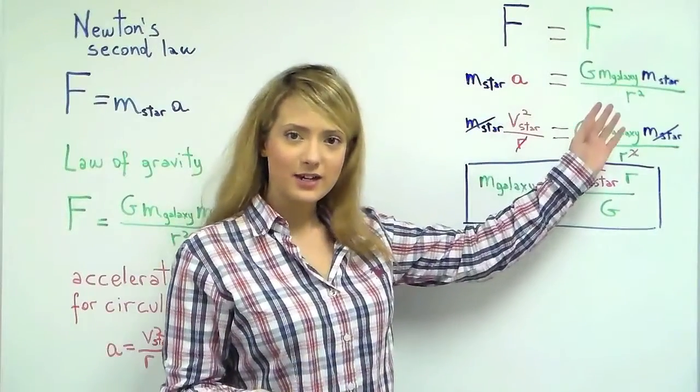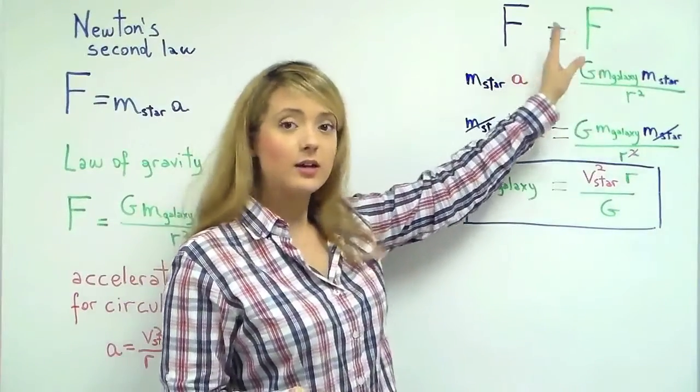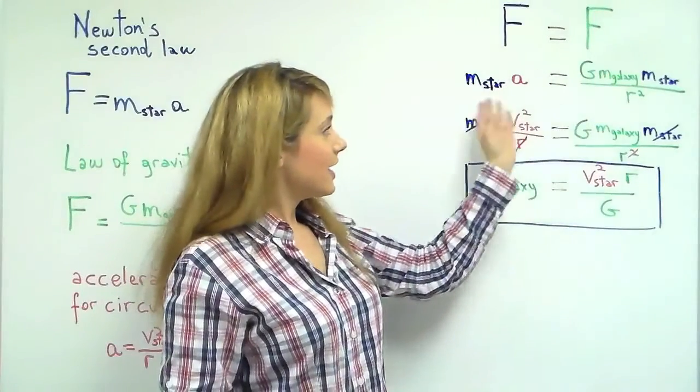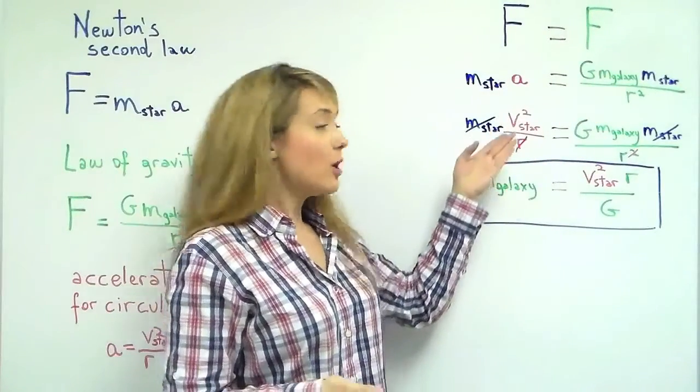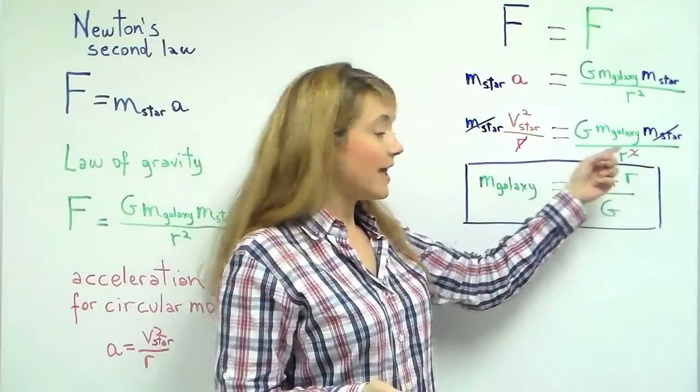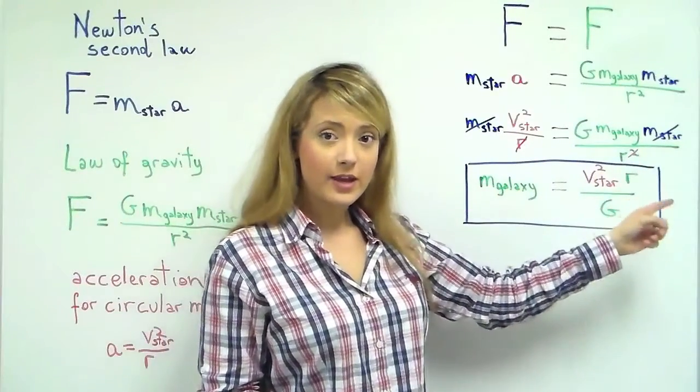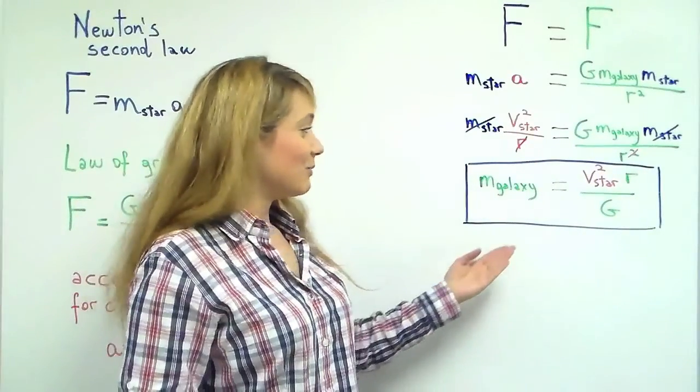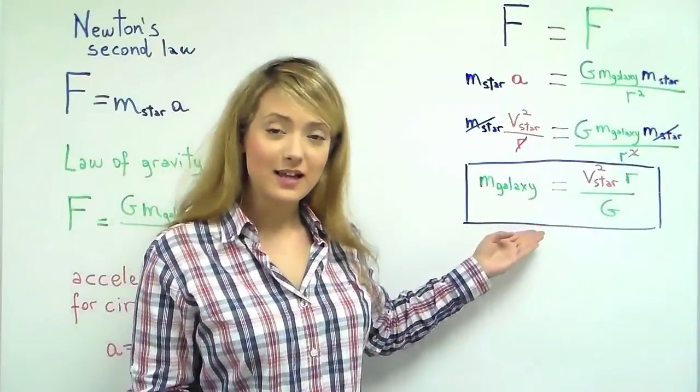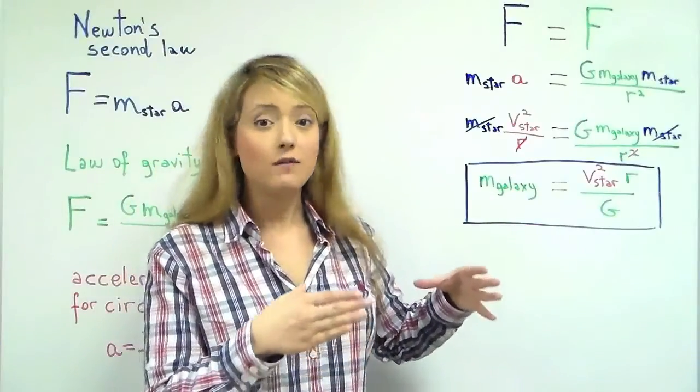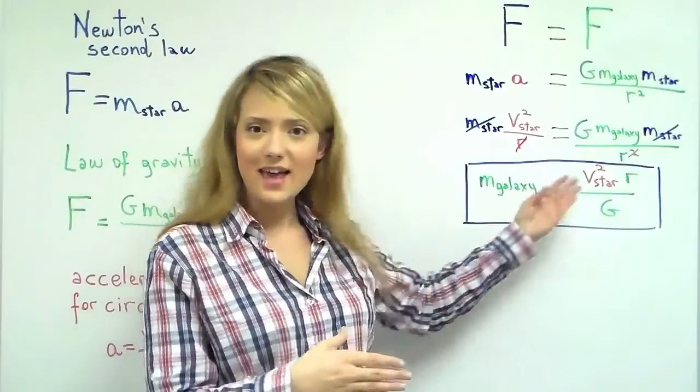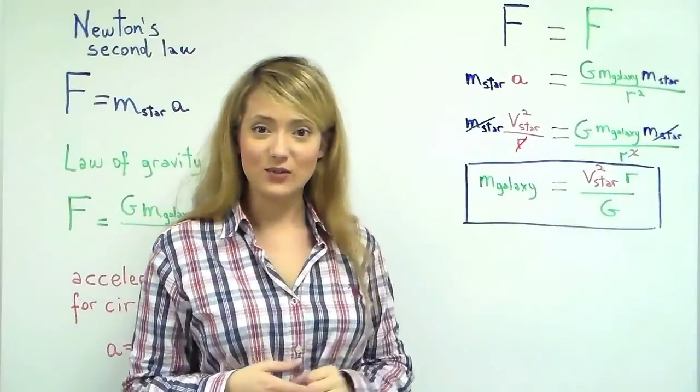Here we have the entire derivation. We should set the law equals to the law of gravity and we simplify out both the mass of the star and one of the radii. And we finally obtain the relationship between the mass of the galaxy inside of the region of the star and the velocity of the star itself.